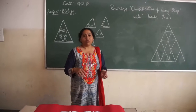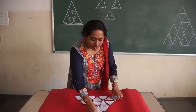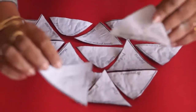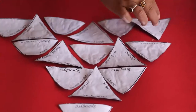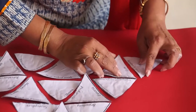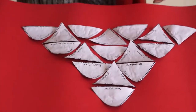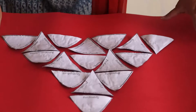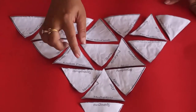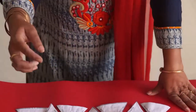Now let me show how this activity is done. These are the cards and on each card there is something written. After you finish the puzzle, you can see that you have to use your logic. The logic here is that we are doing classification of living organisms.